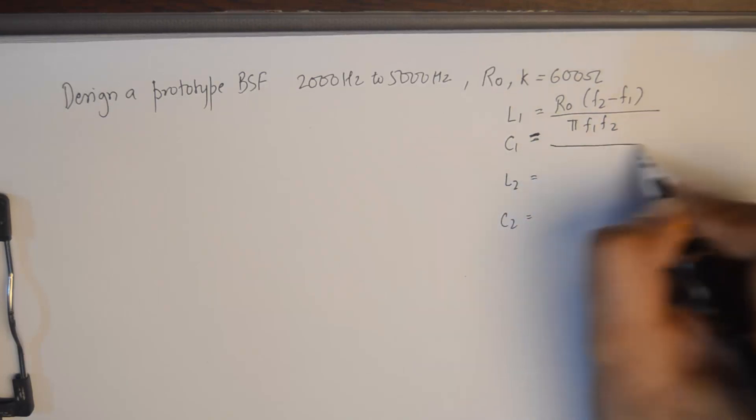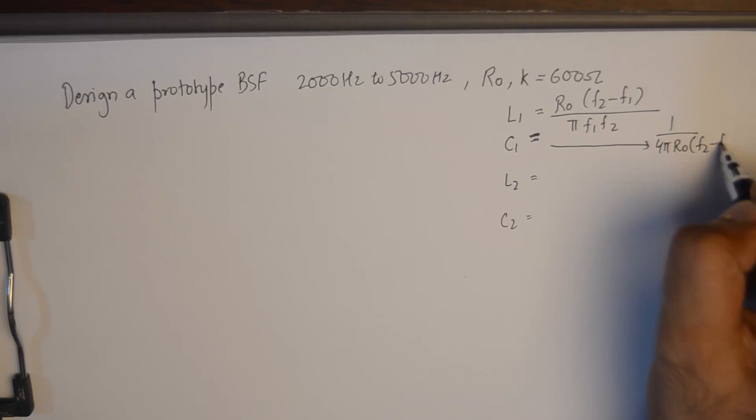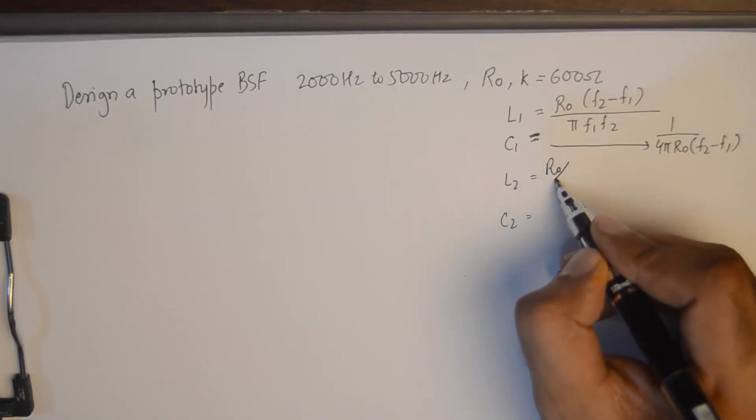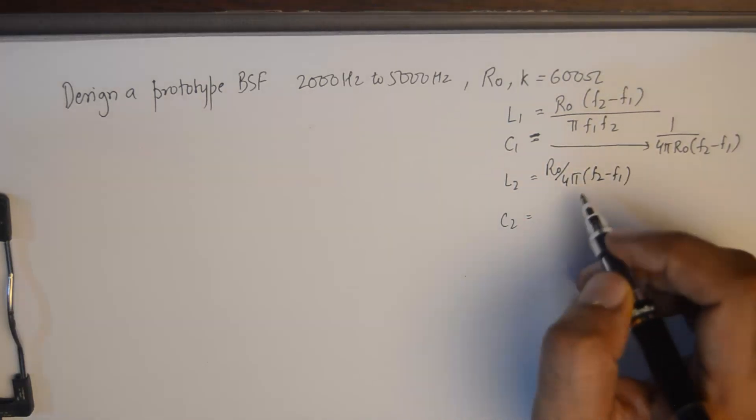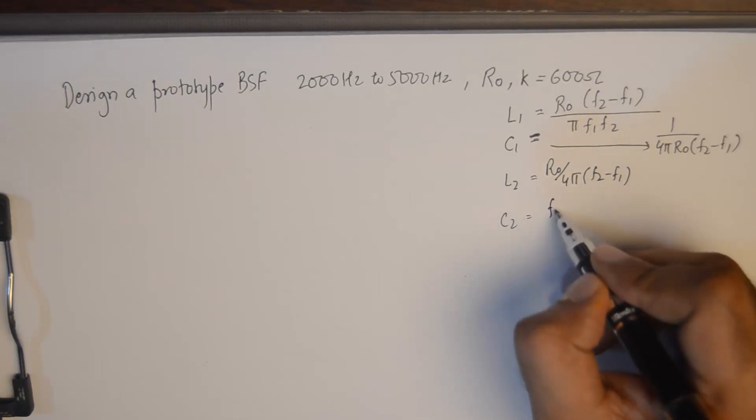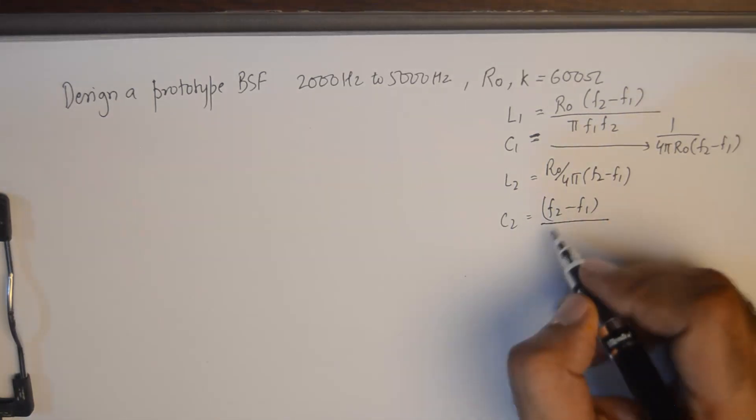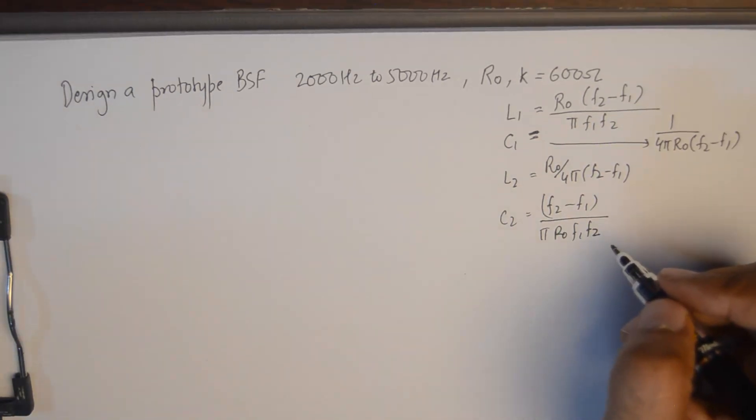This is the formula for L1 and for the formula of C1 it will be 1 upon 4pi R0 F2 minus F1. L2 will be R0 upon 4pi F2 minus F1. And C2 will be F2 minus F1 upon pi R0 F1 F2.